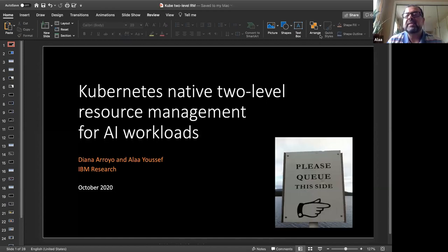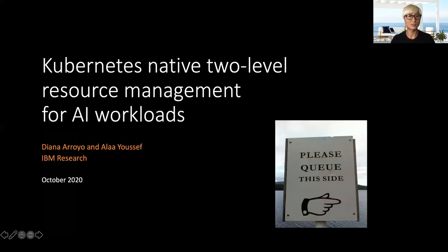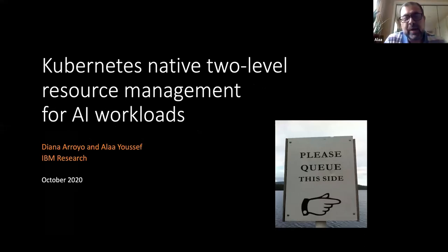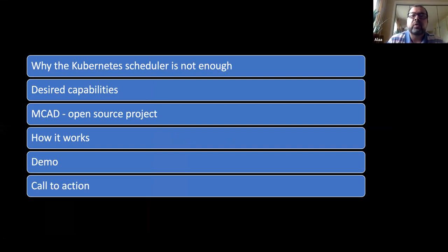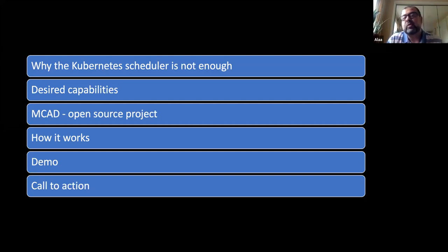Thank you, Daniel. So thank you all for joining today. I'm happy to take you through this presentation together with my colleague Diana. Our topic is Kubernetes Native Two-Level Resource Management for AI and Machine Learning Workloads. Our agenda today: we want to start by explaining why the Kubernetes scheduler is not enough for the scheduling and resource management of these AI and machine learning workloads.